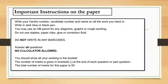You have to answer all the questions. For Paper 1, no calculator is allowed. You should show all your working in the booklet. The number of marks is given in brackets at the end of each question or part question. The total number of marks for this paper is 50 — each paper carries 50.